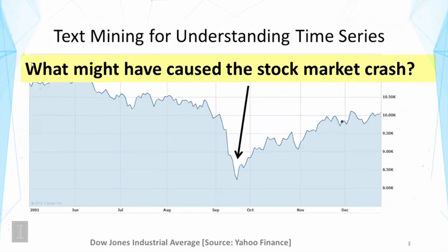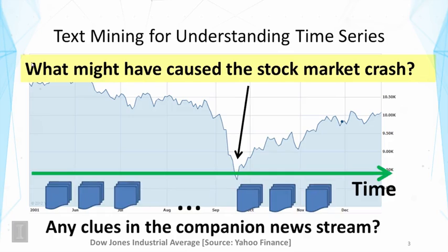In this case, we hope to use text mining to understand a time series. What you are seeing is the Dow Jones Industrial Average stock price curve, and you see a sudden drop here. So one would be interested in knowing what might have caused the stock market crash. The question here is: can we get some clues about this from the companion news stream?